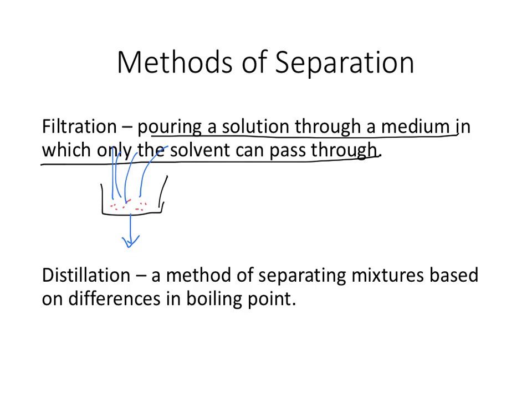So then we have distillation. Distillation is a method of separating mixtures based on differences in their boiling point. So this would be boiling a liquid. Let's put some water in there and get it to boil. But let's just say that there was some other liquid in there. Let's go with oil, and oil has a higher boiling point than water.